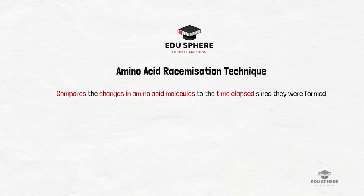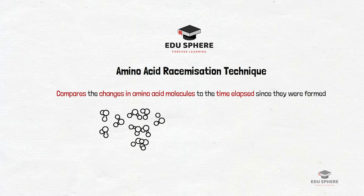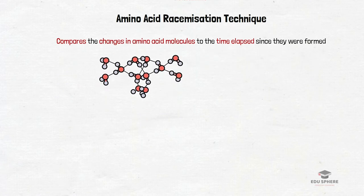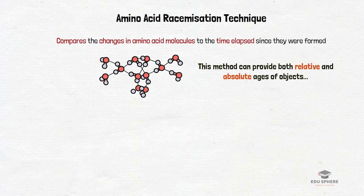This technique simply compares the changes in amino acid molecules to the time elapsed since they were formed. In some texts, this method may be listed under the relative dating category. But just like the obsidian hydration dating that we have discussed earlier, this method can provide both relative and absolute ages of objects. So let us find out how.